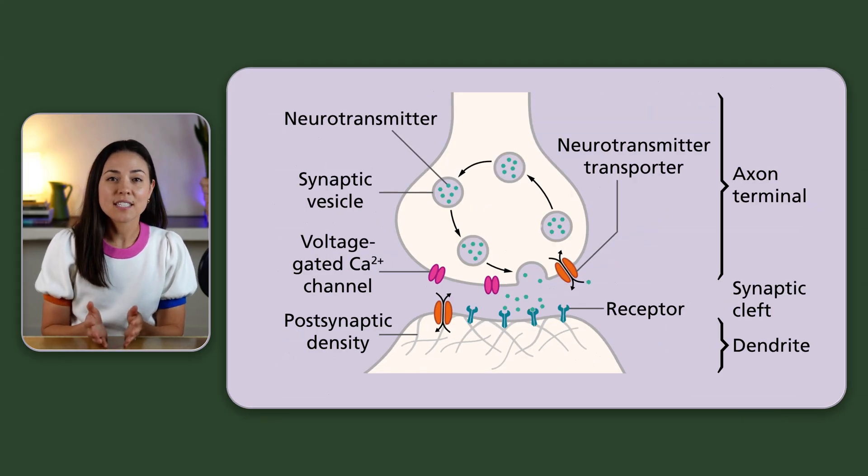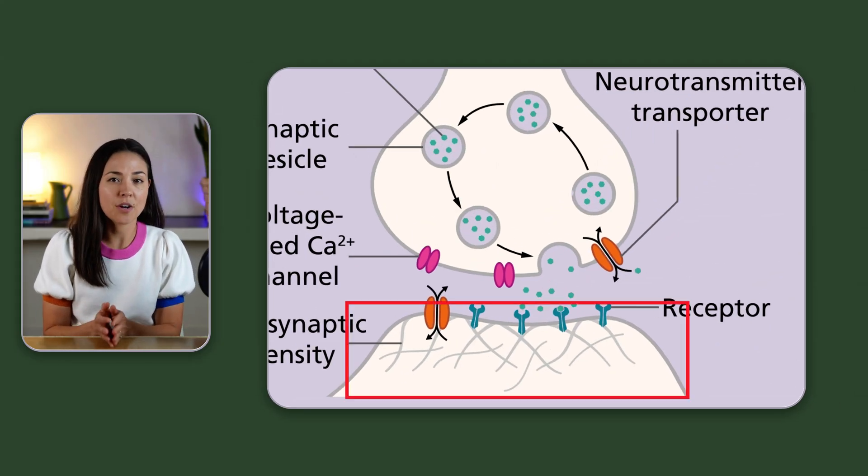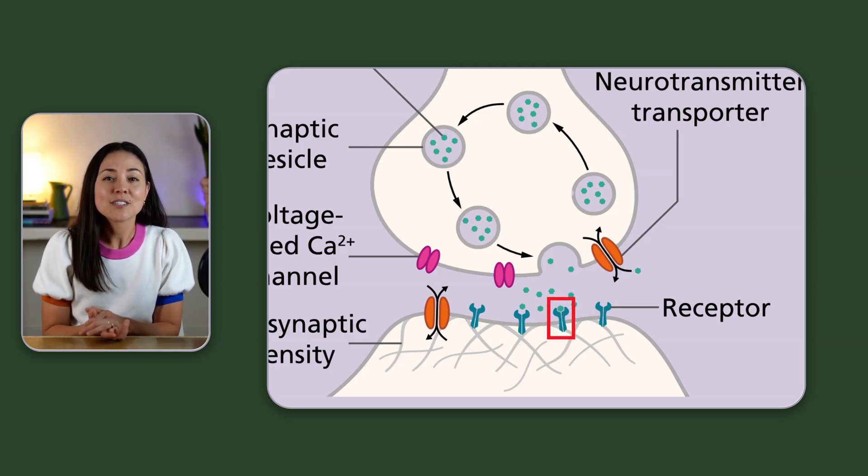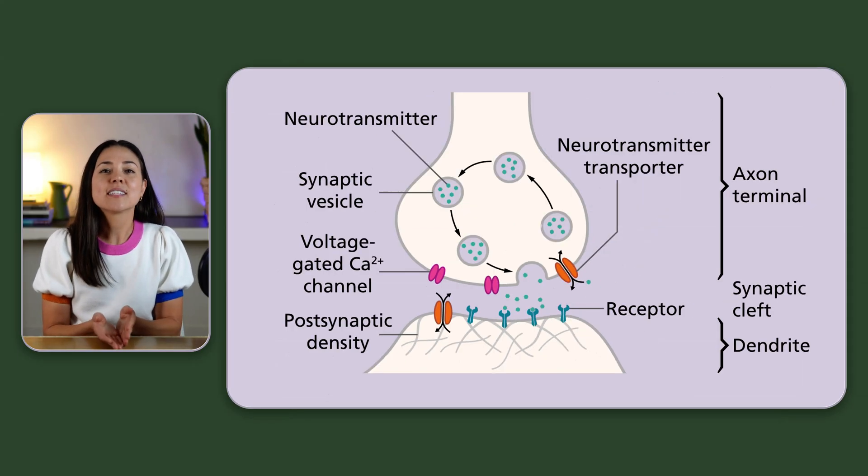And on the other side of the synapse, we have the postsynaptic neuron, which has receptors to catch the neurotransmitters. Once the neurotransmitter nestles into the receptor like a lock and key mechanism, this triggers a signaling cascade downstream into the postsynaptic neuron to pass the message along.